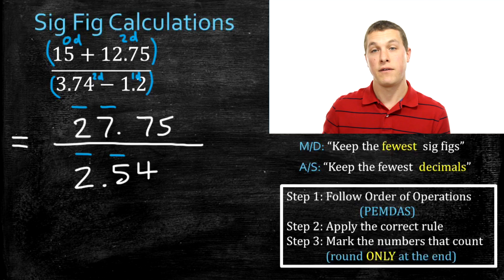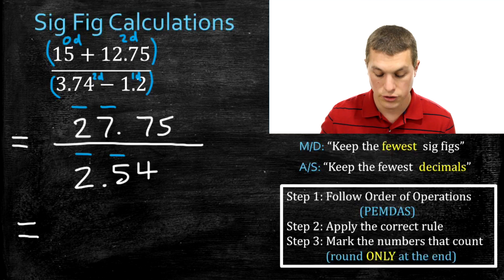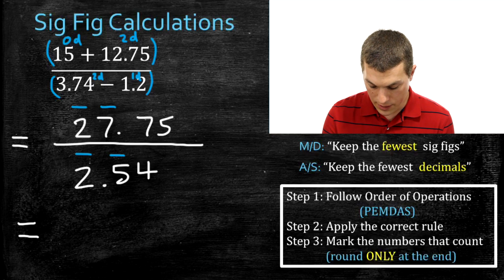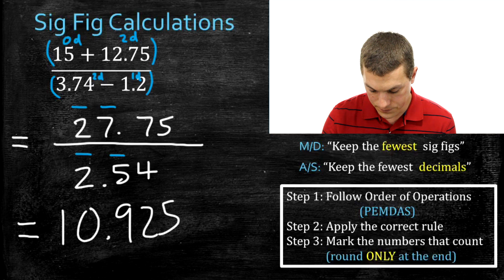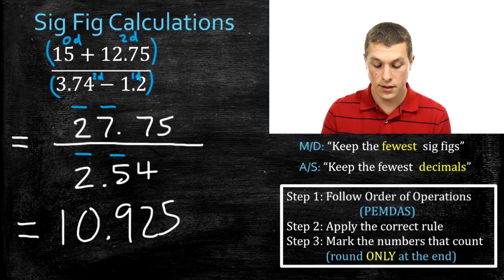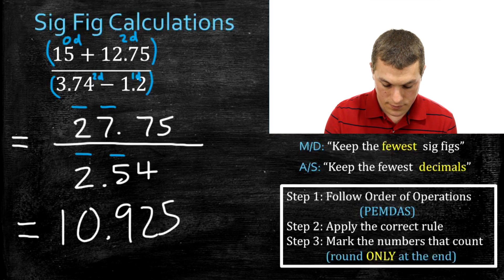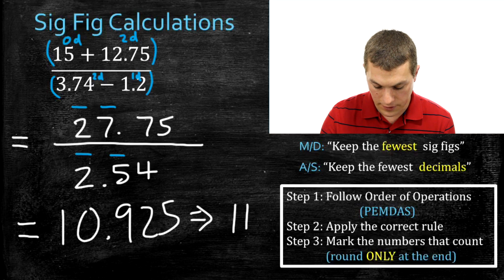Last step — follow order of operations. Only one operation left: division. That big line means division, so I do 27.75 divided by 2.54, and that gives me 2.925 in my calculator. Finally, I round to the correct number of sig figs. Both numbers I just divided have two sig figs, so I round to two sig figs. That gives me a final answer of 11.